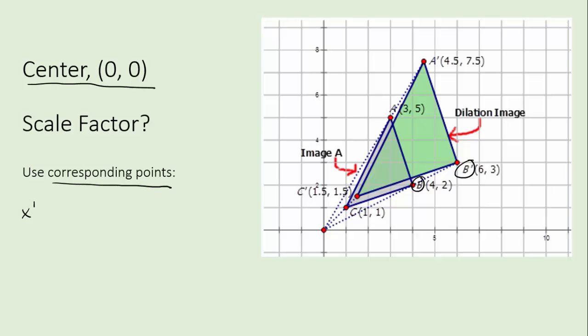And you put the dilated coordinate on top of the non-dilated coordinate. So what would that be? Well B prime has a six for an X coordinate and B had a four. So you put six over four and reduce, turns into three halves which is like one and a half. So that means every side is one and a half times as large. Look how simple that is. We're done.